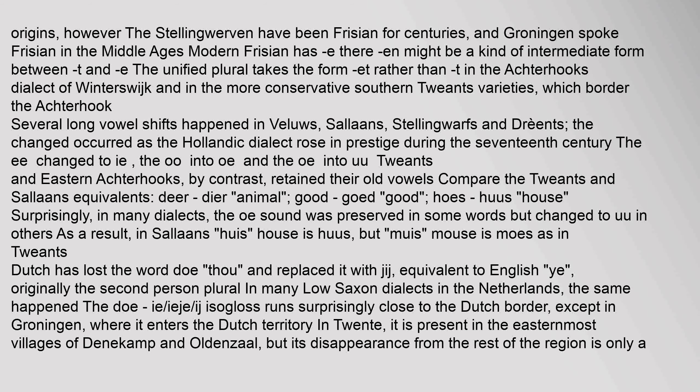The Stellingwarven have been Frisian for centuries, and Groningen spoke Frisian in the Middle Ages. Modern Frisian has '-en' there, which might be a kind of intermediate form between '-t' and '-en.' The unified plural takes the form '-et' rather than '-t' in the Achterhooks dialect of Winterswijk and in the more conservative southern Twents varieties which border the Achterhooks. Several long vowel shifts happened in Veluws, Sallands, Stellingwarfs and Drents as the Hollandic dialect rose in prestige during the 17th century: the EE changed to IE, the OO into OO, and the OO into UU.